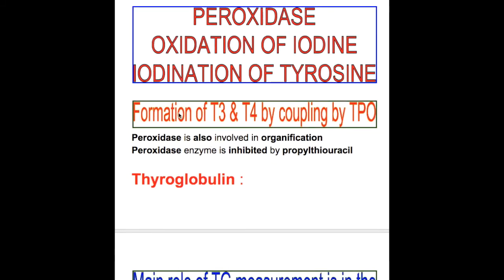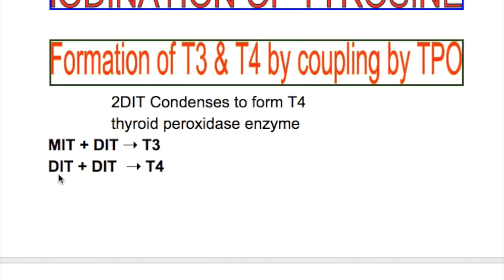Thyroid peroxidase is responsible for the formation of T3 and T4 by coupling — specifically, coupling of monoiodotyrosine (MIT) to diiodotyrosine (DIT) to form T3, and also combining two diiodotyrosine molecules to form T4.